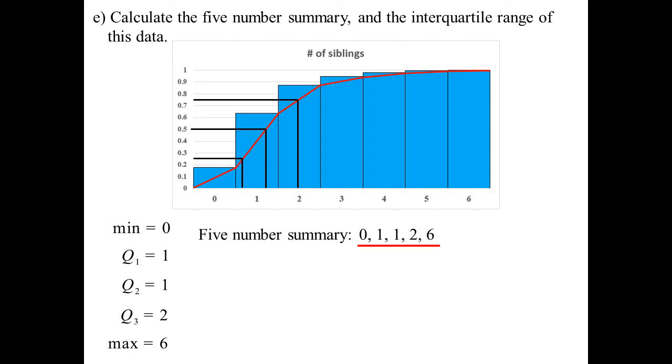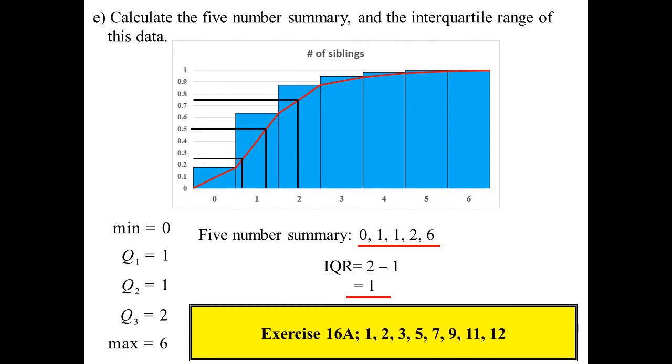Zero, one, one, two, six. Interquartile range. That, if you recall, is the width of the box in the box and whisker plot. And so it's Q3 minus Q1. So two minus one is one. So that's a recap with discrete data before tomorrow we'll start looking at continuous data.